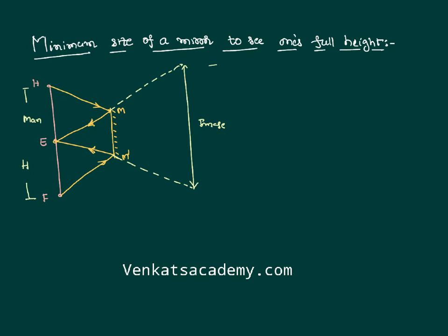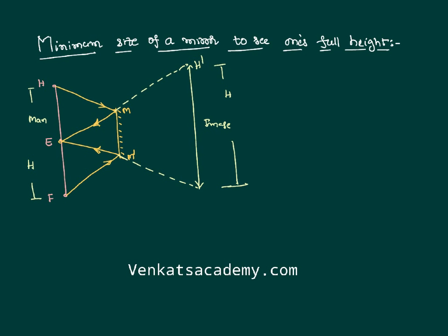It is very clear that if the man has height h, the size of the image is also going to be the same, because we have already proved in the previous video that the size of the object equals the size of the image. So this head part is being seen here and this feet part is being seen here. We also know that if a person is standing at a distance x from the mirror, his image has the same size and is also at distance x.